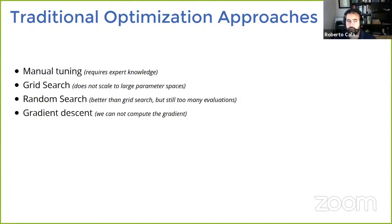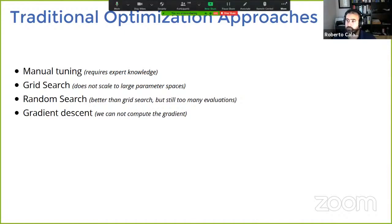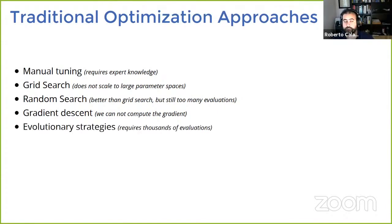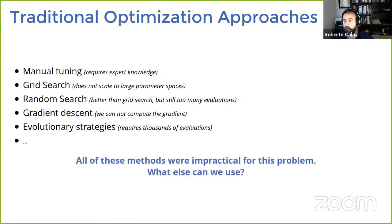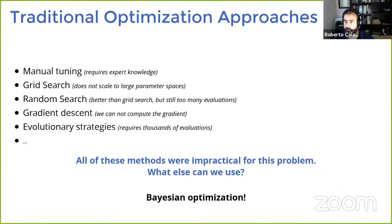Gradient descent is very commonly used, but unfortunately we didn't have gradients of the objective function with respect to the parameters, so we cannot apply it unless we do really expensive things. Evolutionary strategies are another type of global optimization algorithm, very common, but they typically use thousands of evaluations. In practice, all the algorithms we looked at turned out to be impractical for this problem. What I'm going to argue in this talk is that Bayesian optimization is actually the right tool for this type of problems.